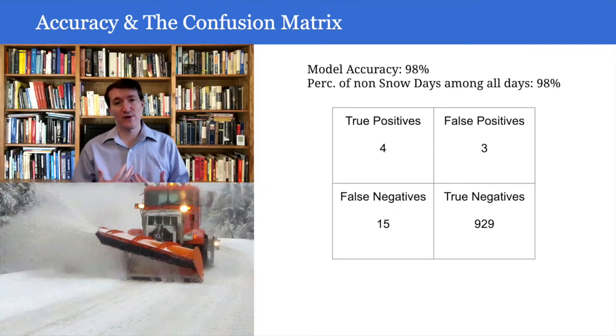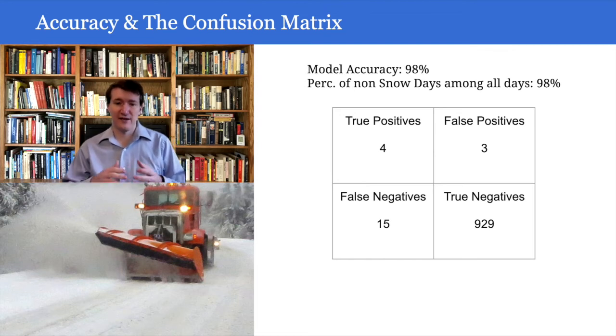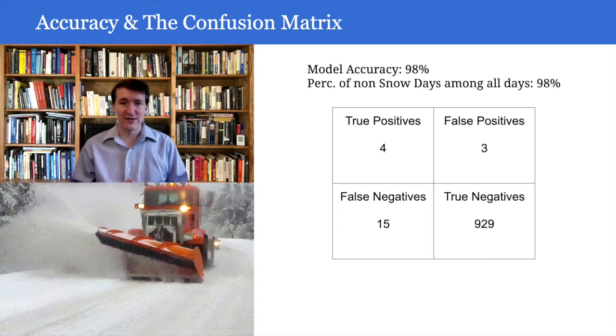And so this is where we introduce the idea of something called a confusion matrix. A confusion matrix is just a way of representing the number of true positives, false positives, false negatives, and true negatives that a prediction makes, or that a model makes, whether it be a prediction or a classification.